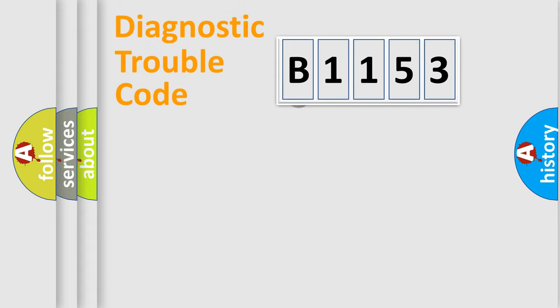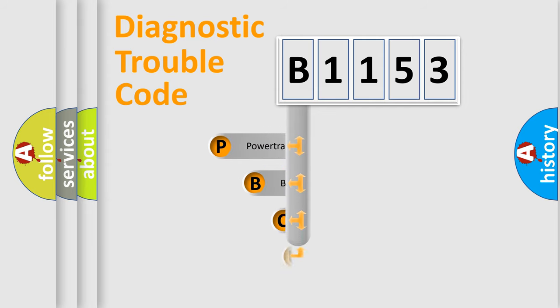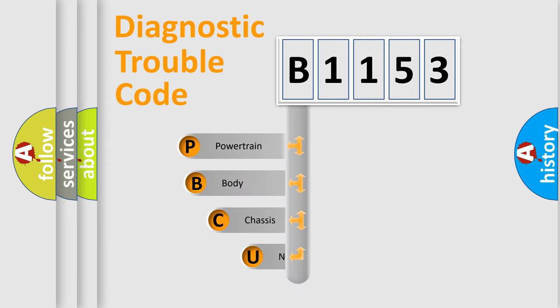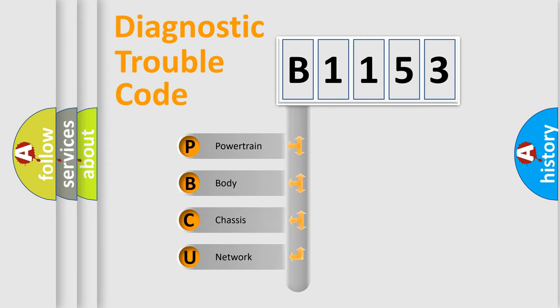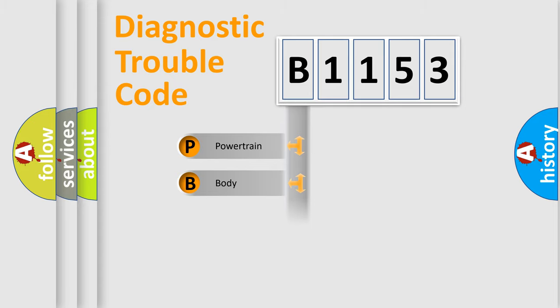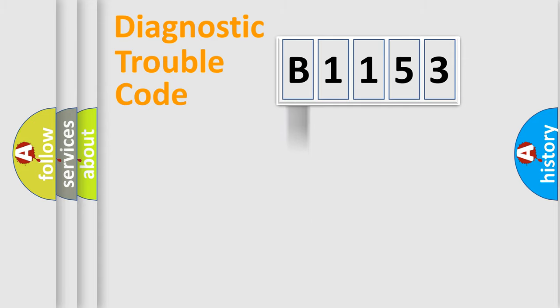Let's do this. First, let's look at the history of diagnostic fault code composition according to the OBD-2 protocol, which is unified for all automakers since 2000. We divide the electric system of an automobile into four basic units: Powertrain, Body, Chassis, and Network.